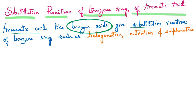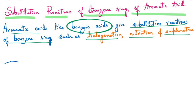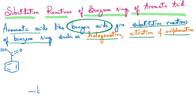The benzene ring of benzoic acid undergoes substitution reactions such as halogenation, nitration, and sulfonation. Before learning these reactions we need to understand the resonating structures of benzoic acid. The carboxyl group (-C(=O)-OH) is an electron-withdrawing group; the pi bonds of the carbonyl group shift toward the oxygen atom, making that carbon bear a small positive charge (delta positive).